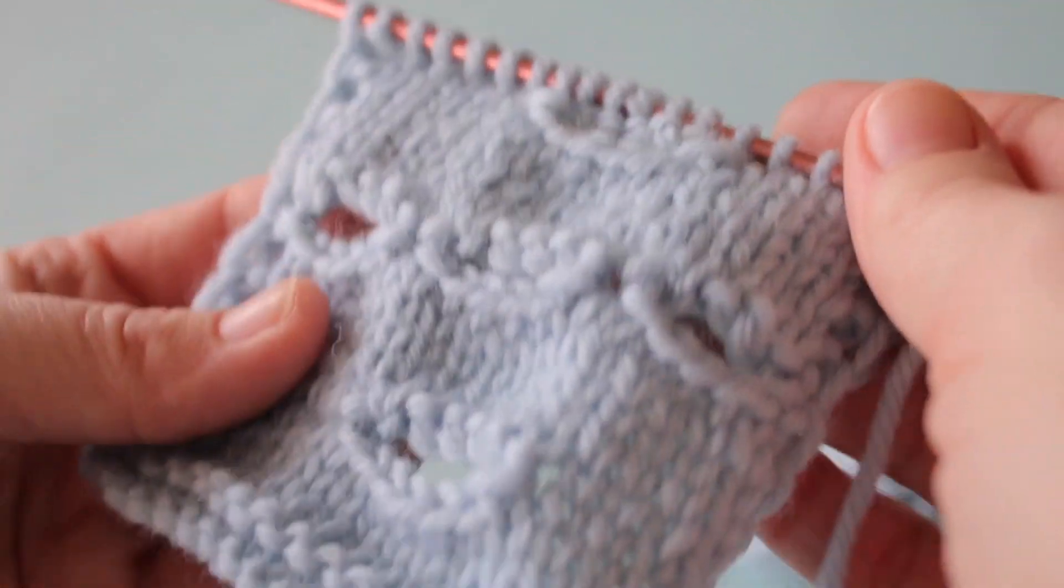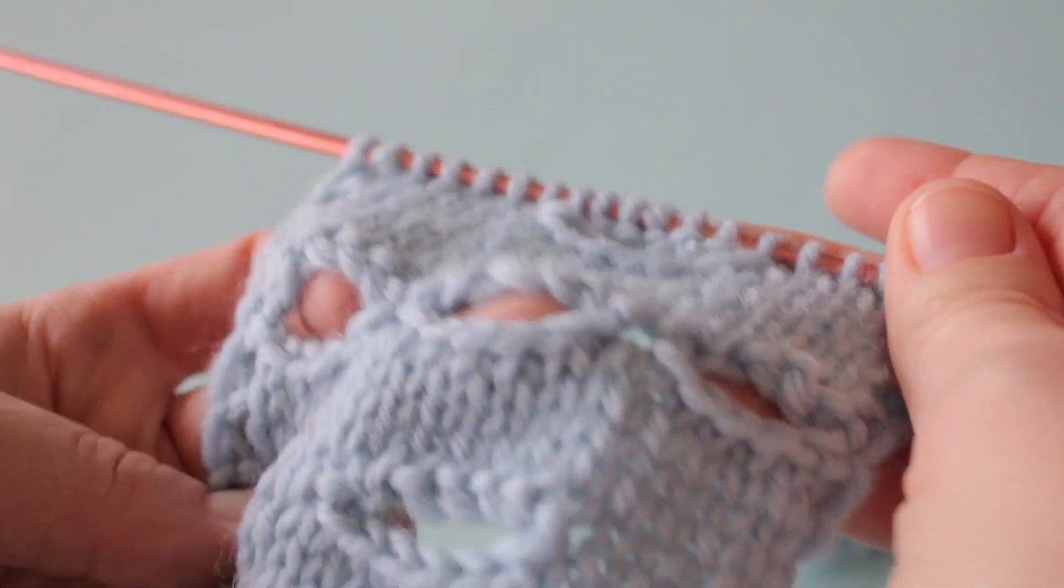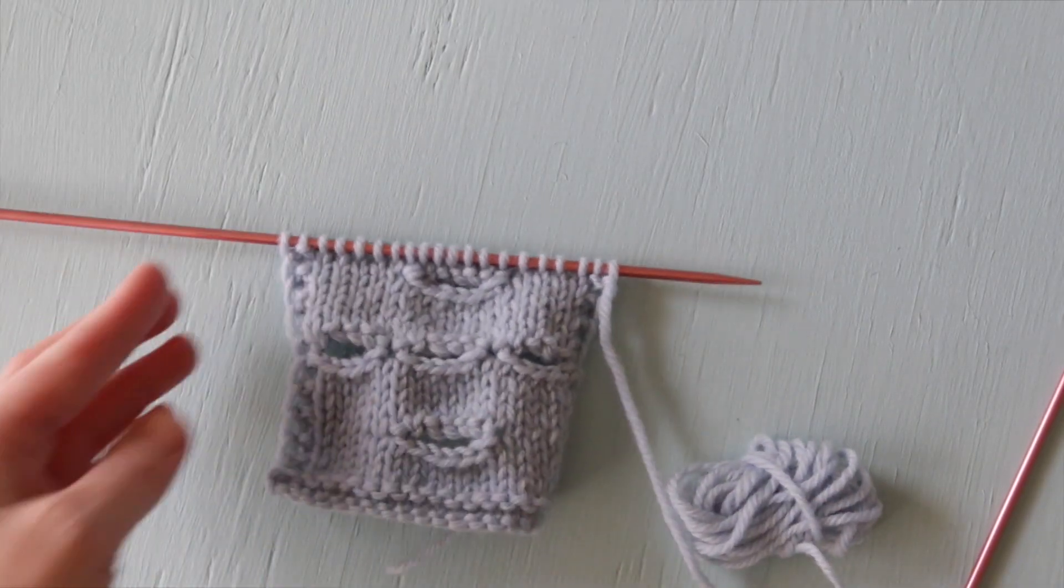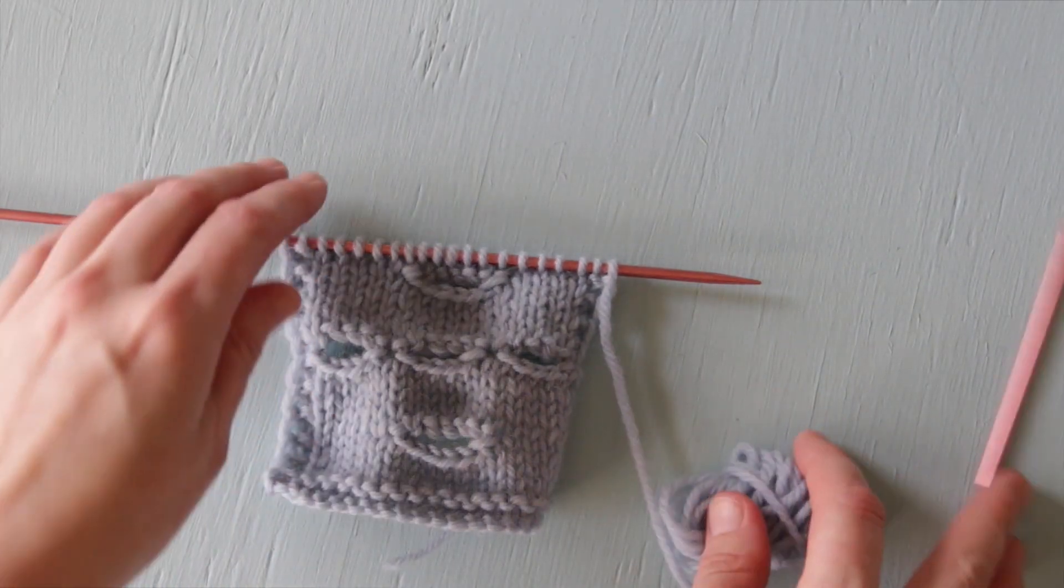This is what the finished one-row buttonholes look like. That row of three in the middle is what it looks like when you work several of them subsequently one after the other in a single row, for your reference.